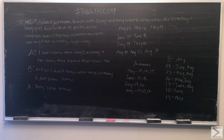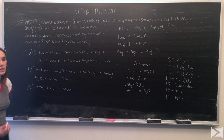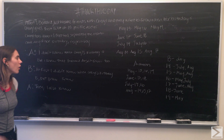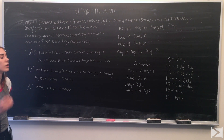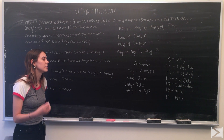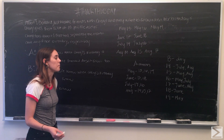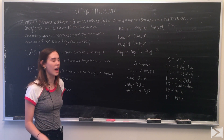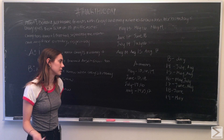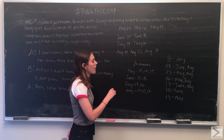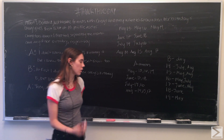The first statement is Albert saying he doesn't know when Cheryl's birthday is, but he knows that Bernard doesn't know either. Albert is given the month. Since Bernard would already know if he'd been given the 18th or the 19th, the only way Albert can be sure Bernard doesn't know is if Albert is confident that neither June nor May is Cheryl's birth month. That's the only way to eliminate June and May.